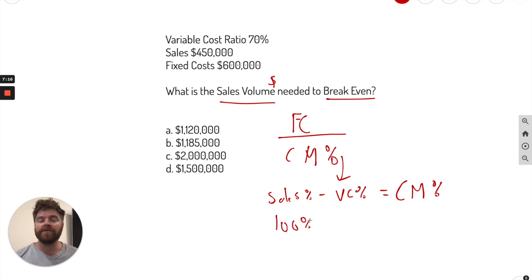So it's actually going to be your sales percentage minus your variable cost percentage equals contribution margin percentage. Now sales is always a hundred, it's very important to know sales is always 100% subtract our variable costs. Well, it gives us the ratio is 70%. So we plug that in, and that's going to equal 30% as our contribution margin percentage. So we just plug that in up here.